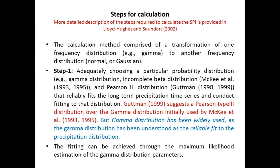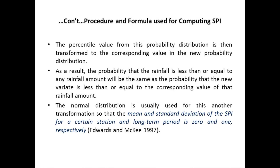The fitting can be achieved through maximum likelihood estimations of gamma distribution parameters. The percentile values from this distribution are then transformed to the corresponding value in the new probability distribution, such that the probability that rainfall is less than or equal to any amount is preserved. The normal distribution is used for this transformation, so that the mean and standard deviation of SPI for a station over the long-term period are zero and one respectively, according to Edwards and McKee (1997).